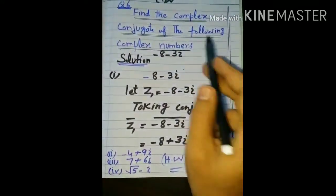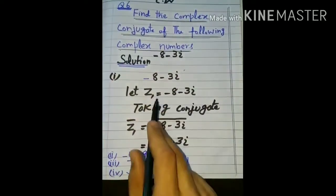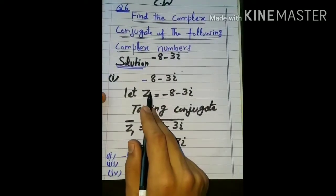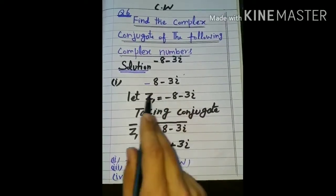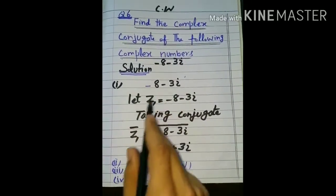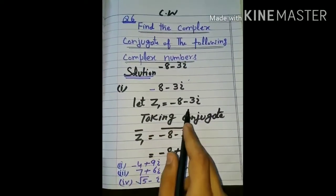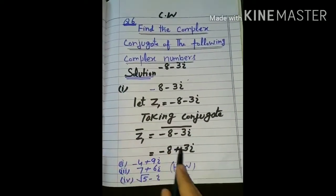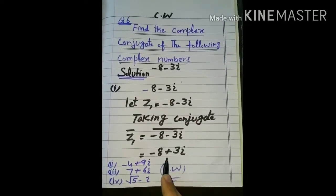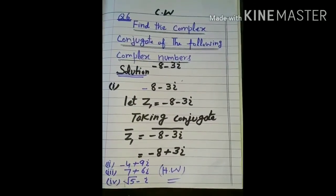Next question: find the complex conjugate of the complex number۔ conjugate میں آپ لوگوں کو بتا دیا کہ ہم imaginary part کا sign change کرتے ہیں۔ اس number کو ہم represent کرتے ہیں اور conjugate لیتے ہیں — conjugate کے لیے bar لگاتے ہیں اور bar میں imaginary part کا sign change ہو جاتا ہے۔ تو minus 8 اور plus three iota آجائے گا۔ باقی آپ لوگوں نے homework کر لیں۔ Thank you.